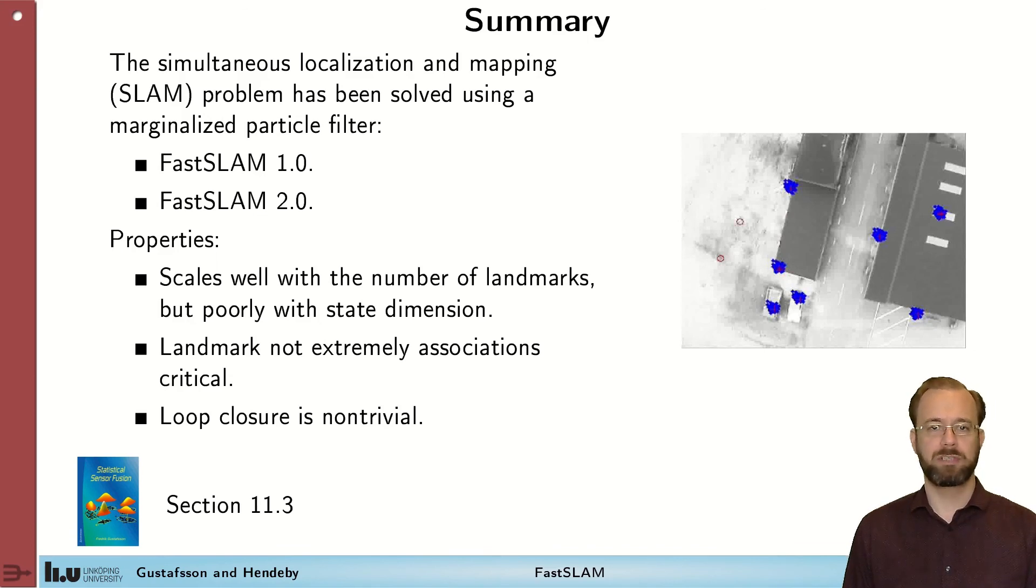That also explains why it's popular in the robotics community. Landmark associations are not extremely critical. Unfortunately, FastSLAM handles loop closures poorly, but there are methods to get around that if necessary. To read more about FastSLAM methods, look in the textbook in section 11.3. Thank you.